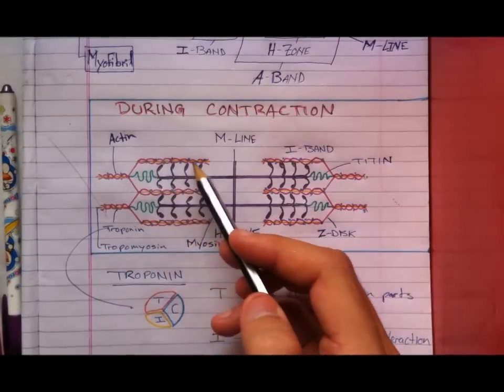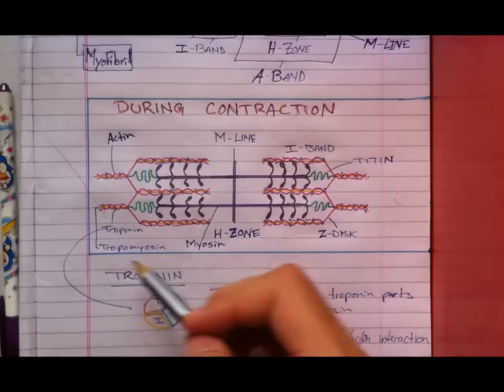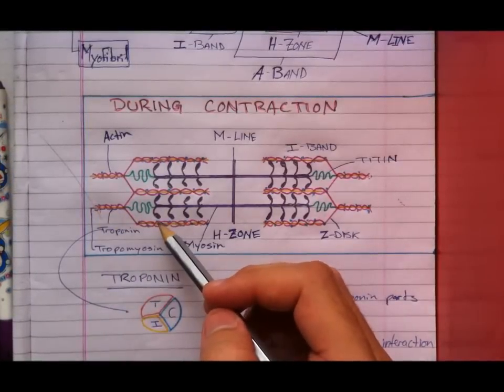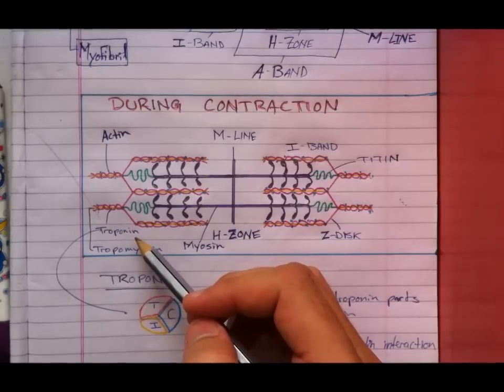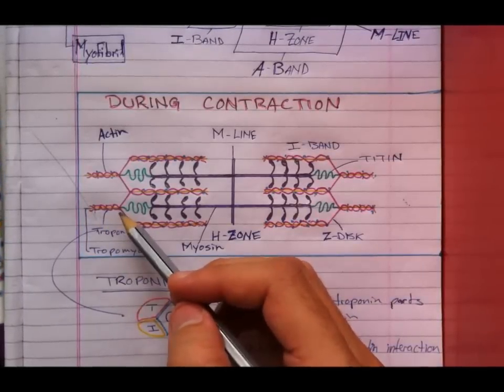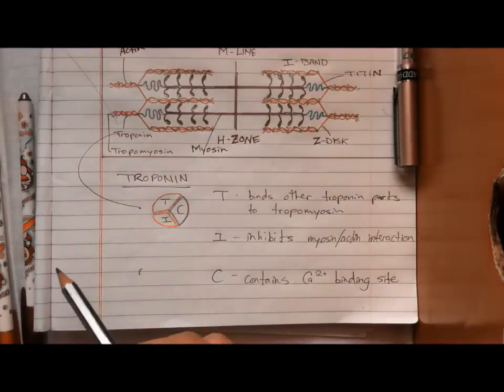There's a double helix form here. Now tropomyosin is a long filament which rests between these two chains, and troponin is a small globular molecule which occurs at regular intervals on tropomyosin. Troponin is made of three parts.